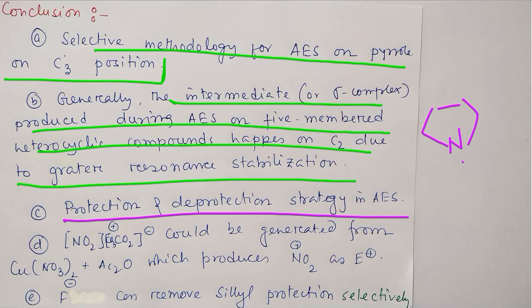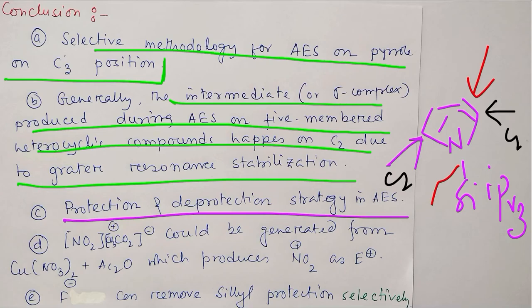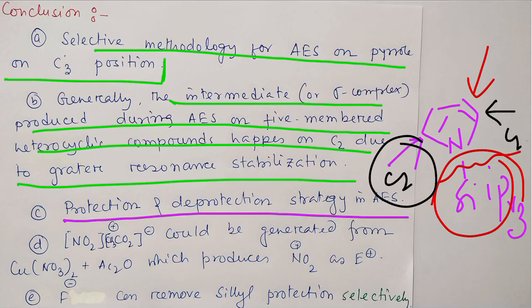Protection-deprotection strategy in AES: we are protecting the two C2 positions using silyl IPR, so consequently the reaction is forced to happen at C3, and after that we deprotect. We blocked these positions such that reaction can happen selectively at C3.